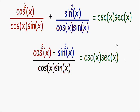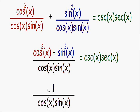This is something else you need to have memorized — this is a Pythagorean identity: cosine squared of x plus sine squared of x is equal to one. So instead of writing cosine squared of x plus sine squared of x in the numerator, I'm going to replace it with one. Please write that down if you don't have it memorized.